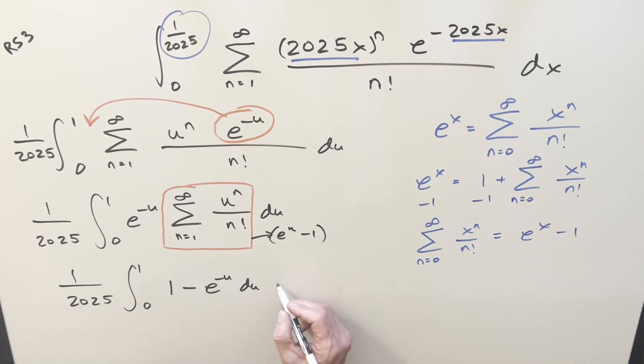But what happened? Now we've got a really easy integral. So we have the constant up front. Integrating this, integral of one, that's just u. Integral here, e minus u is going to be minus e minus u, minus times minus, plus evaluate from zero to one.